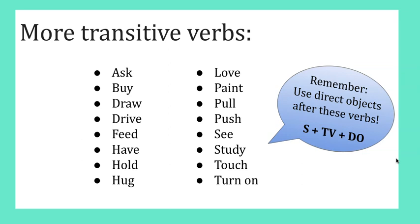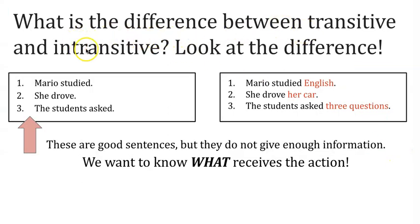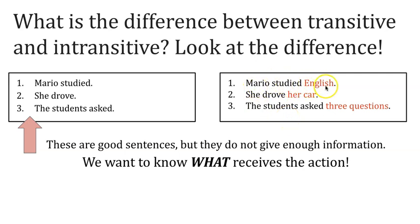One more time — what is the difference between transitive and intransitive verbs? Look at the difference: 'Mario studied.' 'She drove.' 'The students asked.' In these examples the verbs are used as intransitive verbs. They are good sentences but they do not give enough information. We want to know what receives the action. So we can change these to stronger sentences: 'Mario studied English' — 'English' is the direct object. 'She drove her car' — 'her car' received the action of driving.